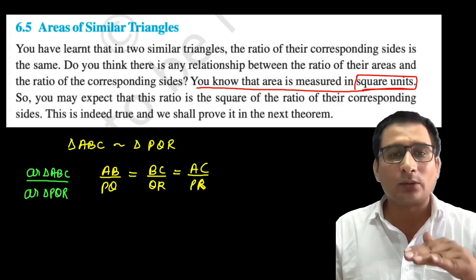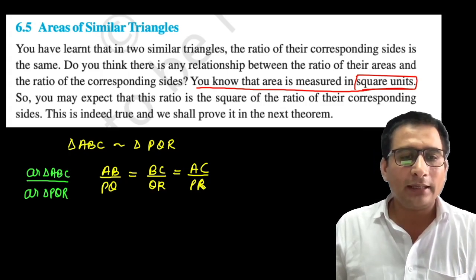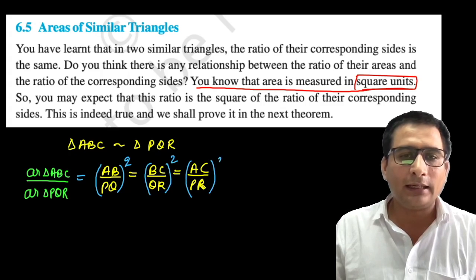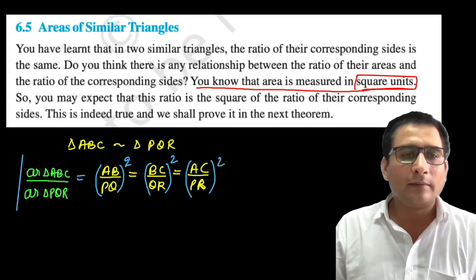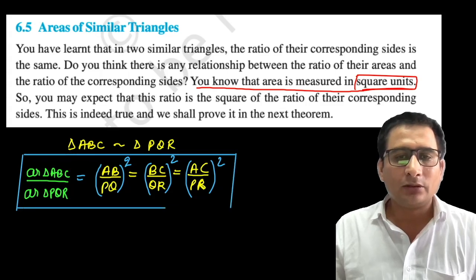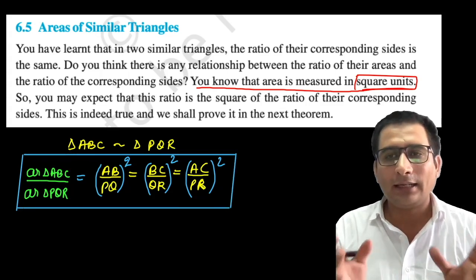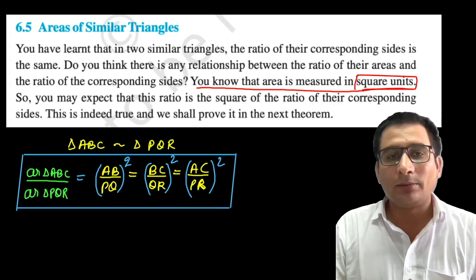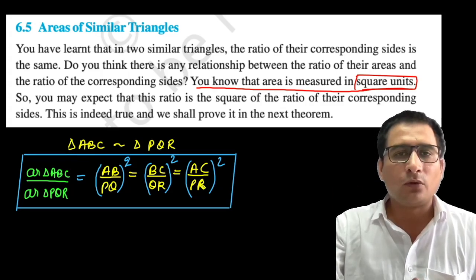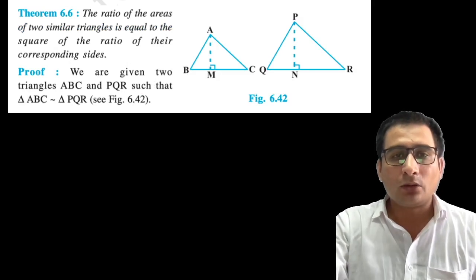The relation we get is: the ratio of the areas is equal to the square of the ratio of their corresponding sides. This is the relation between the area and the sides of two similar triangles, and we are going to discuss it in detail. So now let's move forward. Look at this theorem here.